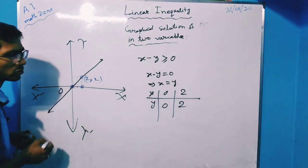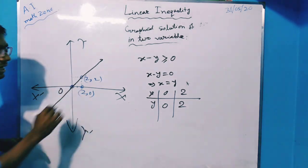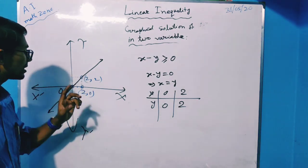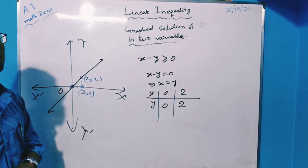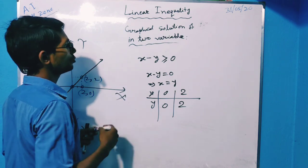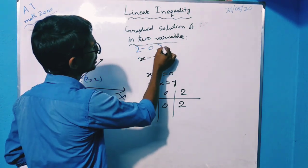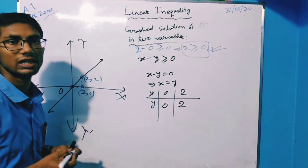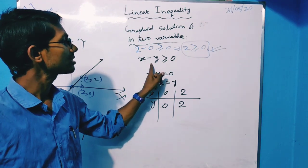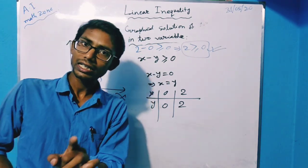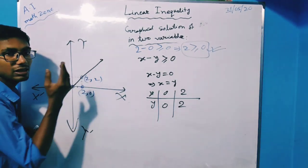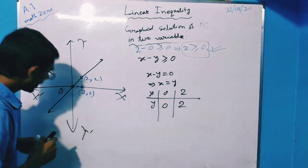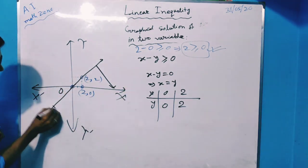Let's take the point (2, 0), which is on the lower side of the line. Now let's test whether this point satisfies the linear inequality. If we put x equals 2, then 2 minus 0 is greater than or equals to 0, which implies 2 is greater than or equals to 0. This statement is correct. Since the point (2, 0) satisfies the inequality and it is on the lower side of the line, the solution region will be the entire lower side of the line.